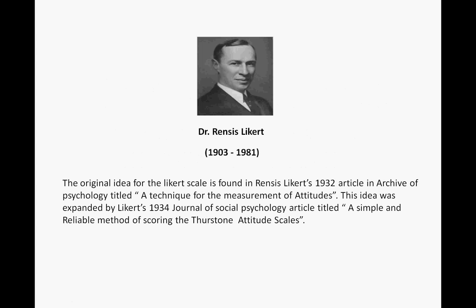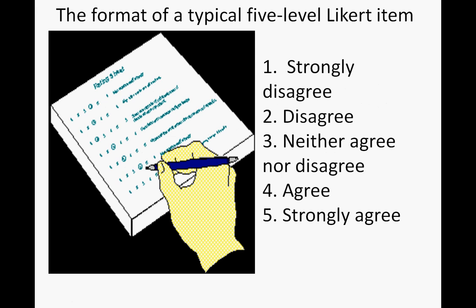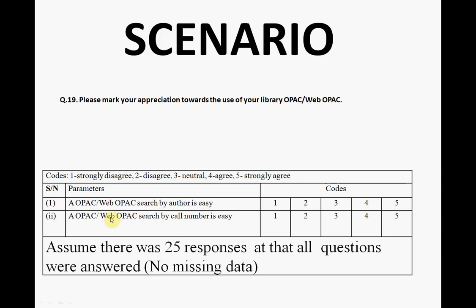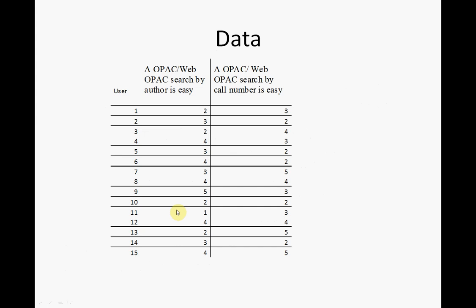Dr. Rensis Likert, 1932 — just a bit of history there. A typical scale for a five-level Likert form: usually one is the most negative and five is the most positive. I made up a question about the OPAC — open public access — library system, where one is strongly disagree and five is strongly agree. There were 25 responses and no missing data.